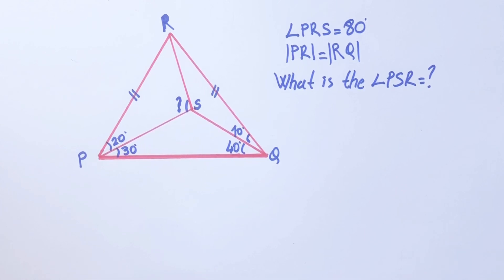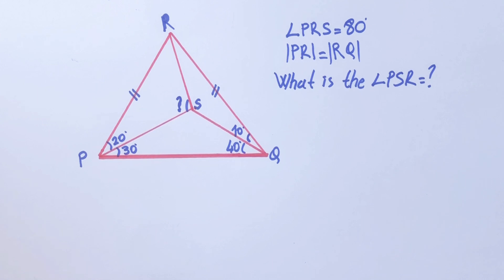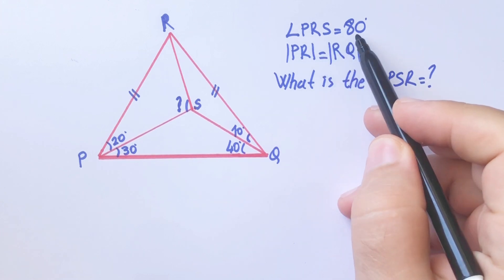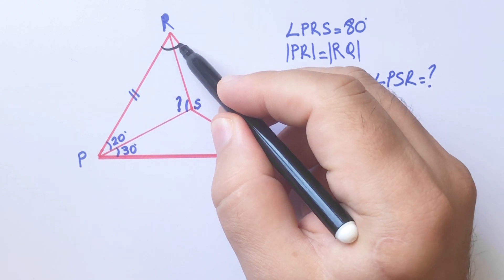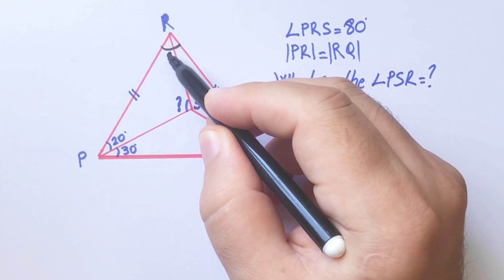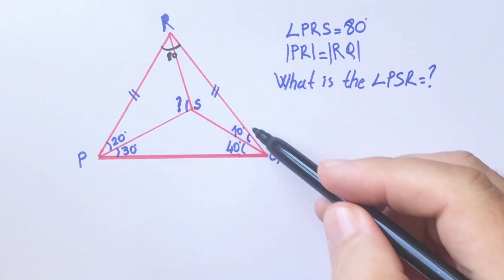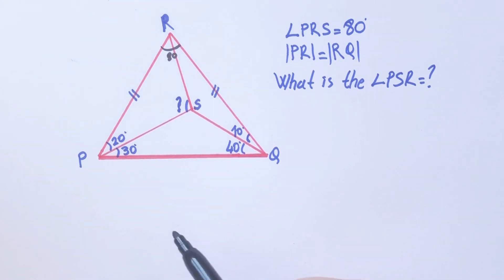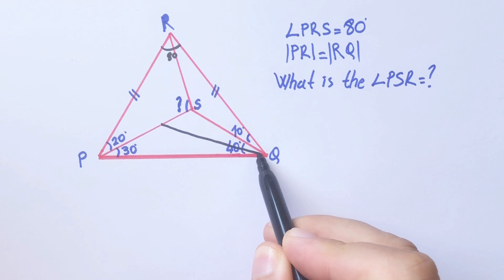Hello everyone, today I have a very good question for you. Let's start. Angle PRS is 80 degrees. This triangle is an isosceles triangle, and PR and RQ are equal.